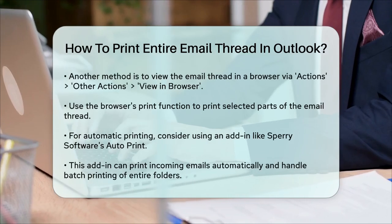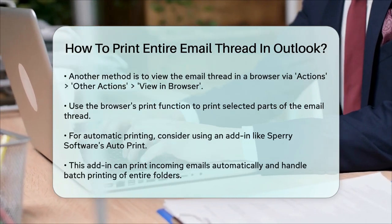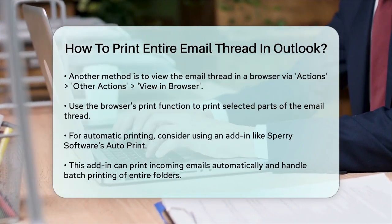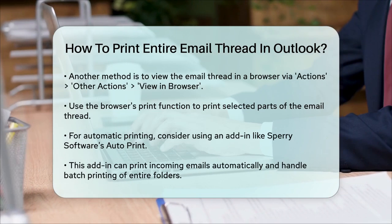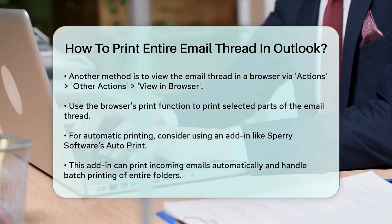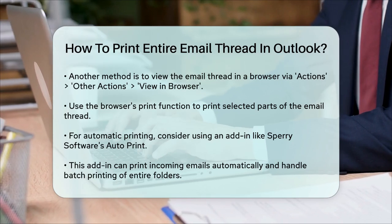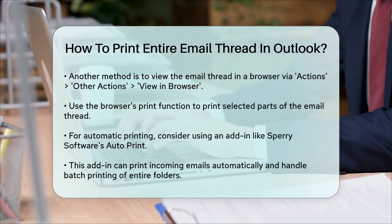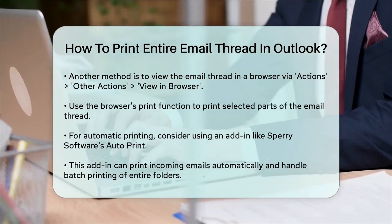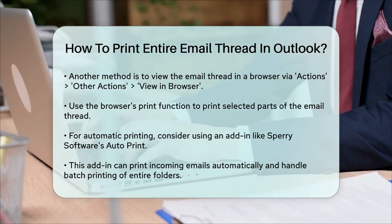This will open the email in your default web browser. Here, you can select the part of the email thread you want to print and use the browser's Print function to print the selection. For automatic printing of emails, including entire threads, you can use an add-in like Sperry Software's AutoPrint. This add-in allows you to configure Outlook to print incoming emails automatically, including attachments, and it can handle printing entire folders of emails in batch.